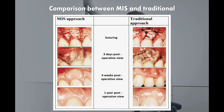In MIS tissue retraction and flap elevation, only sharp dissection is used with care; papillary tissue can be thinned to a thickness of 2 to 3 mm and small flaps are reflected. In traditional surgery, comparatively broader instruments are used, which can affect wound healing. MIS has more magnification and illumination, while in traditional surgery, visualization of the surgical site is compromised. The small surgical opening in MIS limits the instrumentation available to remove granulation tissue, while traditional surgery allows better granulation tissue removal. Placement of graft material is the same in both approaches.